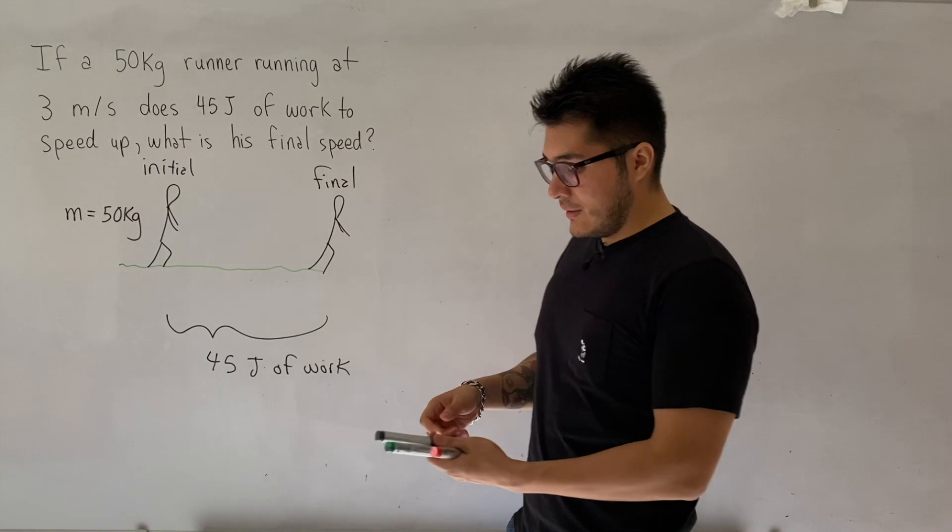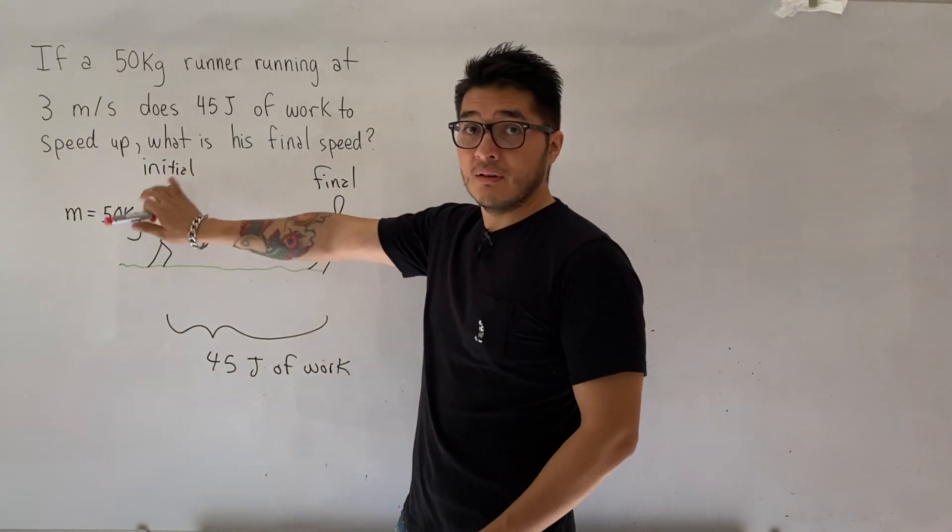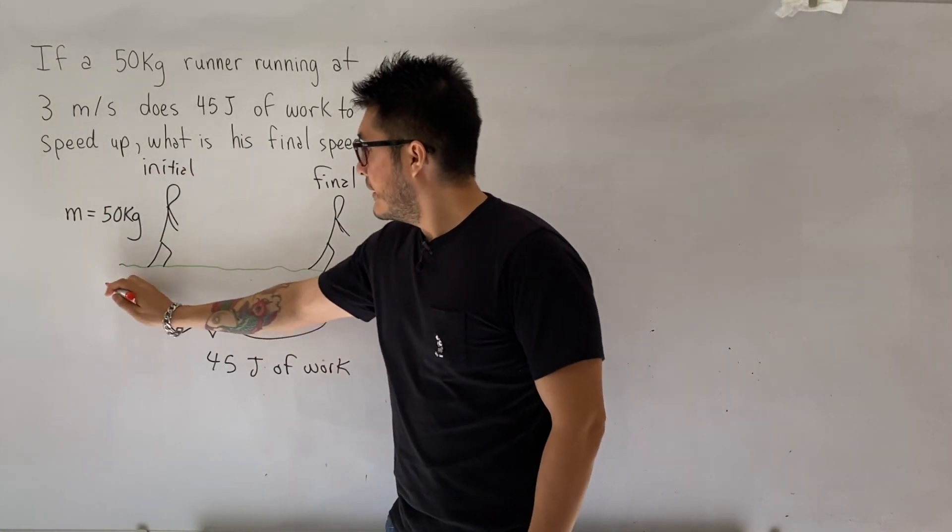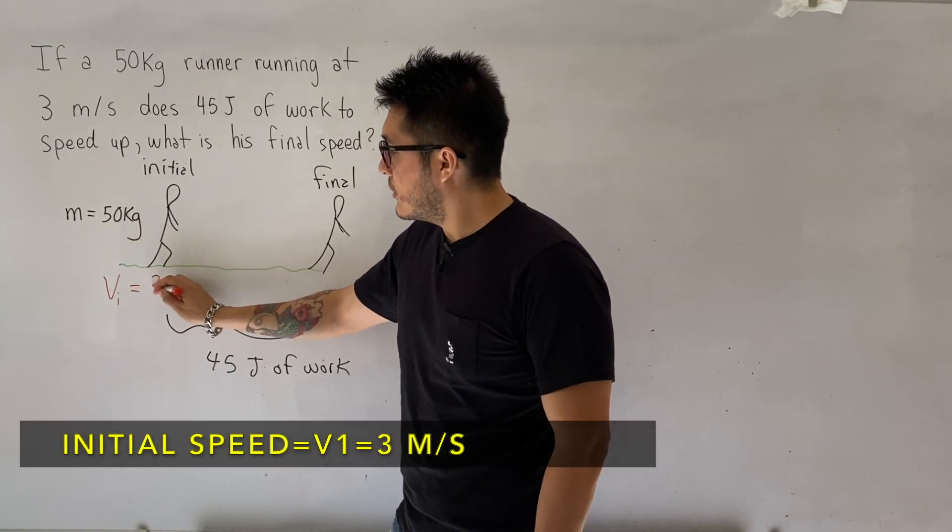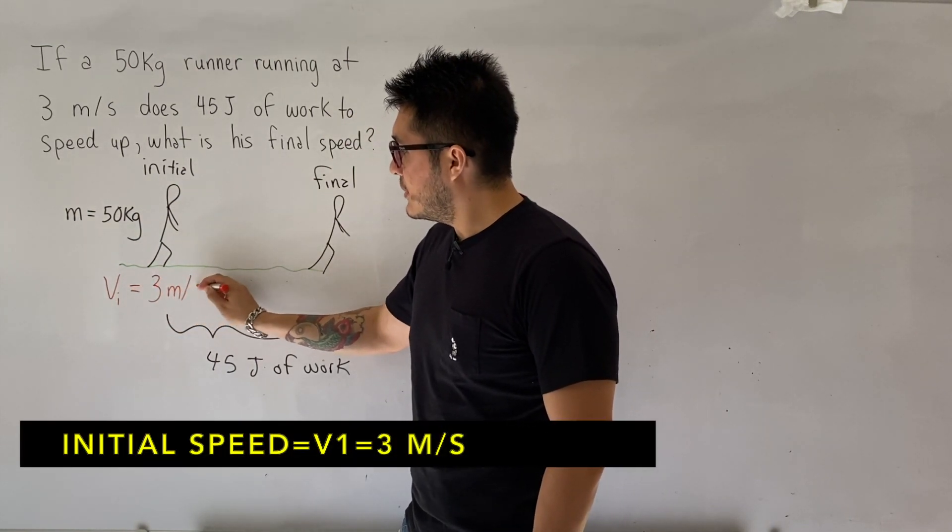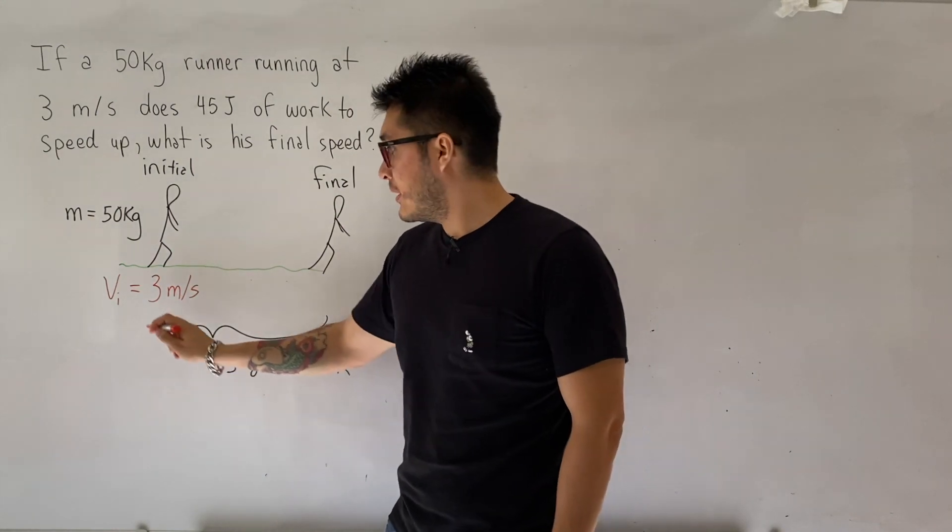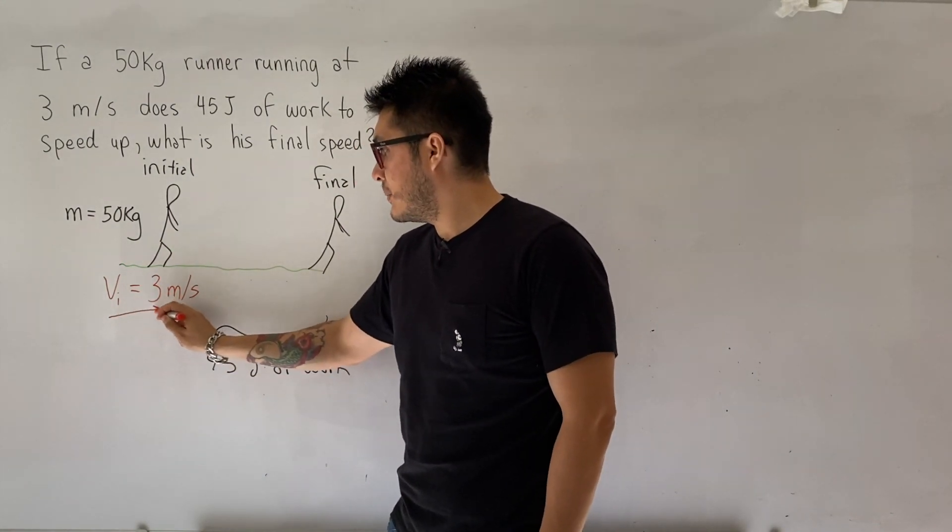The initial velocity of the runner, and again, that's why it's good to have initial conditions. The initial speed, Vi, is 3 meters per second. So we could draw the vector arrow, it will be to the right, just to help remind us.